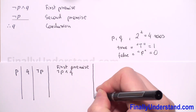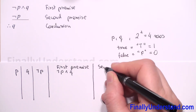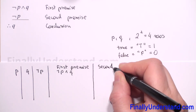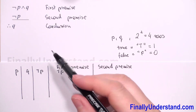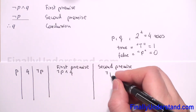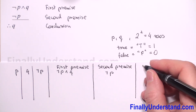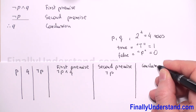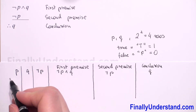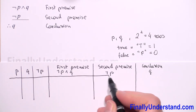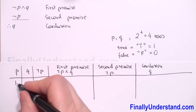Next we have to write the second premise, which is not-p. And in the last column we have to put the conclusion, which is q.